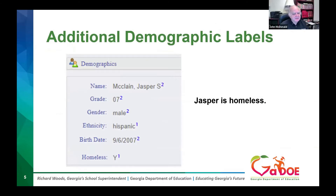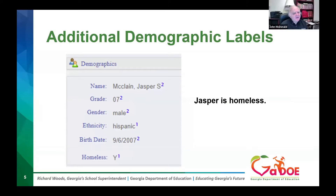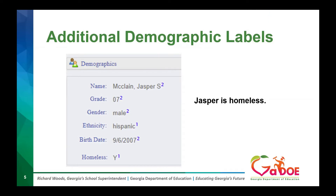When you look at the demographics, every student is going to have in the demographic box in the upper left-hand corner: a name, a grade, a gender, an ethnicity, and a birthday. Everybody will have that. Now some students will have additional labels. Jasper here is homeless, which is very important for you as a teacher to know — it could explain why they have body odor, why their clothes aren't clean, and the type of home life they have.